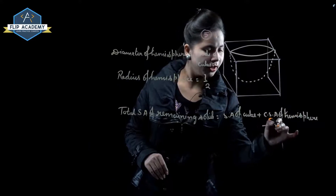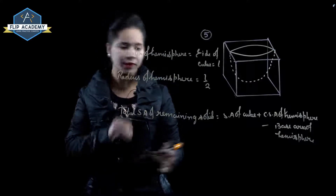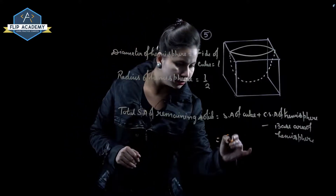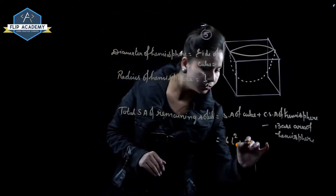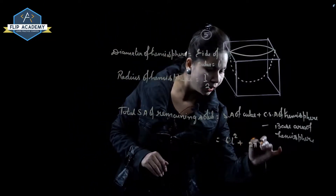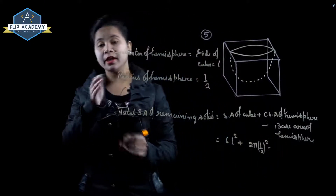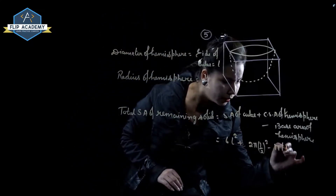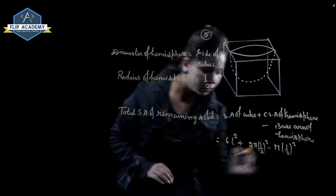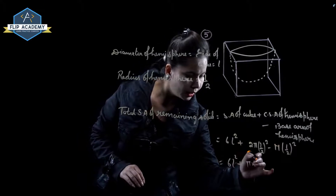Surface area of cube is 6 into side squared, so 6 l squared. Curved surface area of hemisphere is 2 pi r squared, so 2 pi into l upon 2 whole squared. Minus base area of hemisphere, which is the circular part: pi r squared, so pi into l upon 2 whole squared.